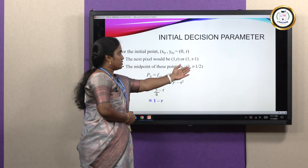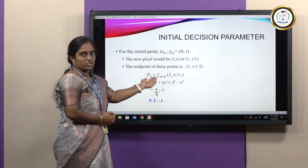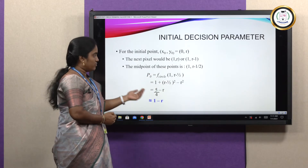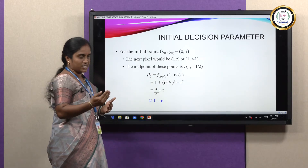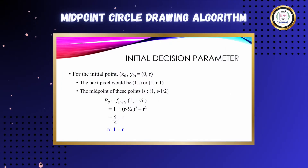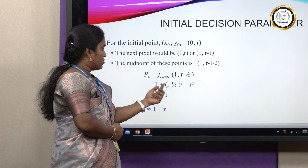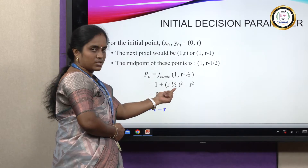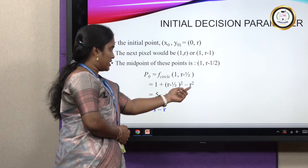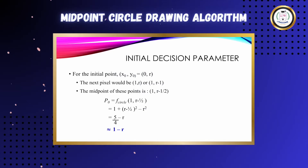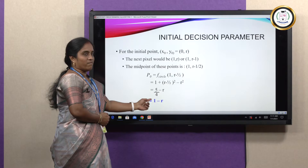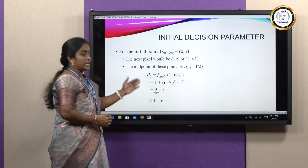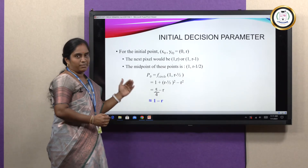Substituting x = 1 and y = r − 1/2 into x² + y² − r²: 1² is 1, and (r − 1/2)² expands as a minus b whole squared. When expanded, we get 5/4 − r, which can be approximated to 1 − r. This becomes the initial decision parameter p0.